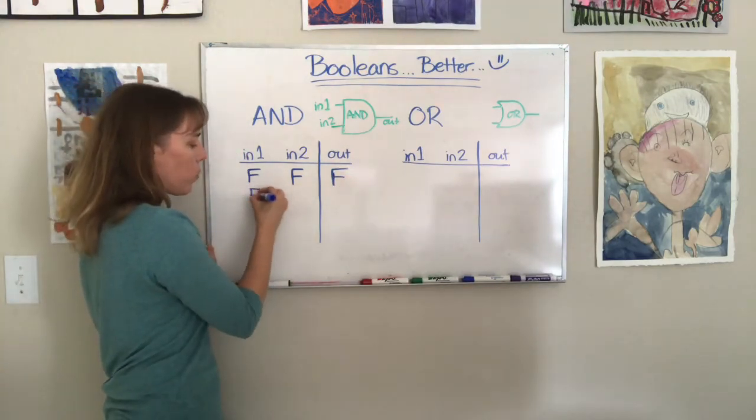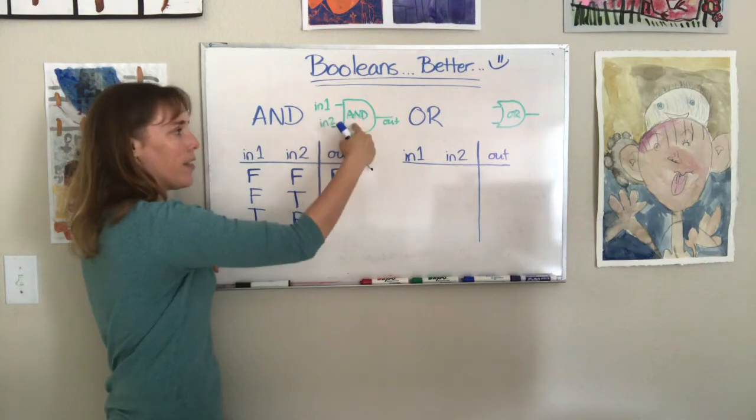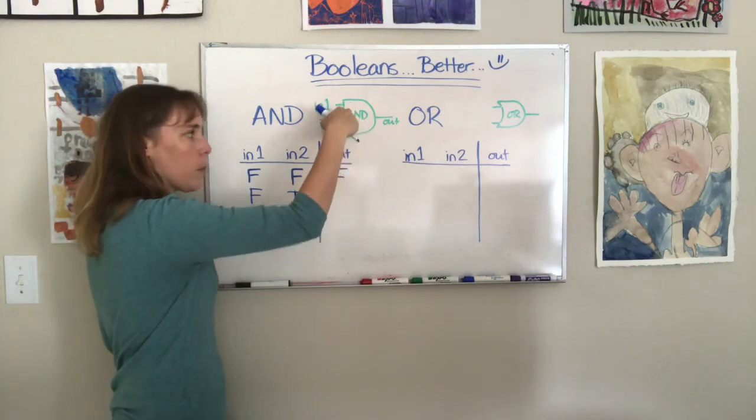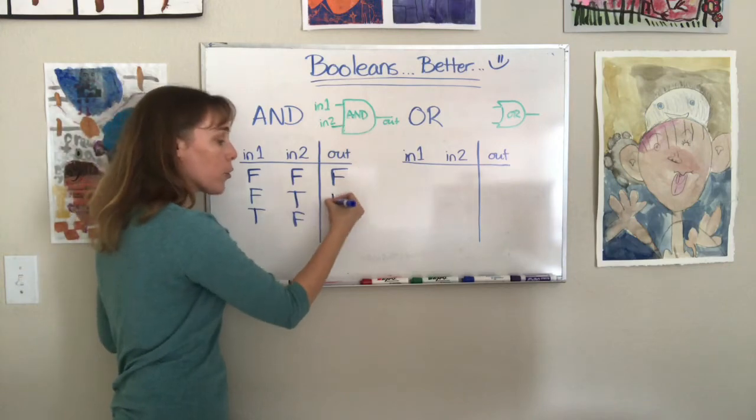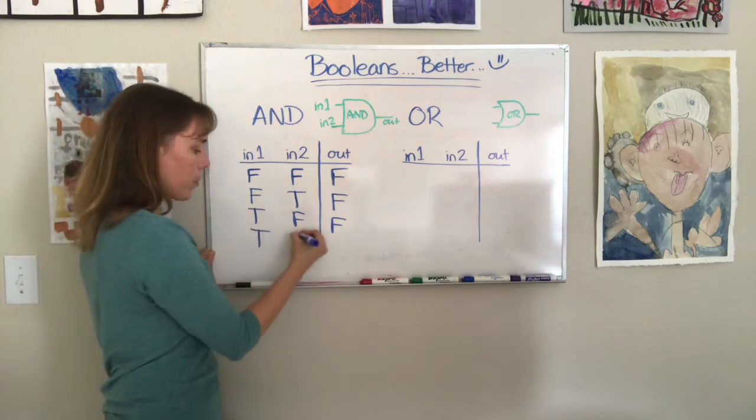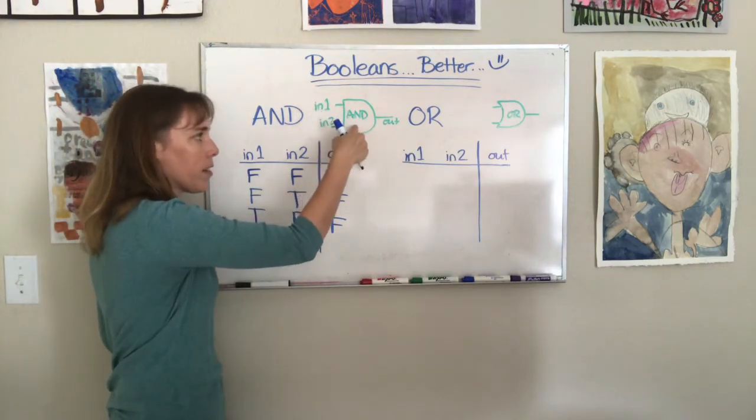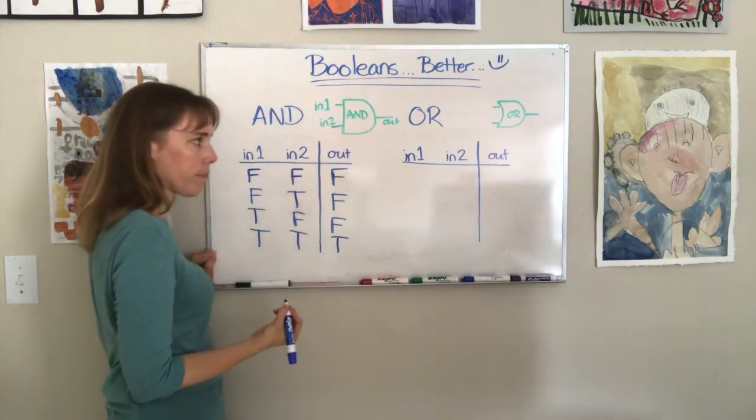So if you put power into one but not into the other one, and this is an AND gate, it wants this one and this one to both have power before it gives you anything. So you're still not gonna get anything useful out. And then the other option, the very last one, is that if you have power in both places and it's AND, you're definitely gonna get some power out.